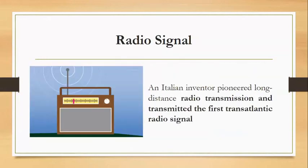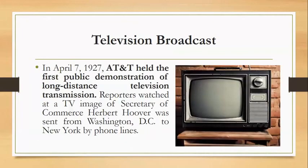After the telephone, our way of communication upgraded to radio signals. An Italian inventor pioneered long-distance radio transmission and transmitted the first transatlantic radio signal. From radio signals, we have television broadcast. On April 7, 1927, AT&T, a Bell Telephone Company, held the first public demonstration of long-distance television transmission. Reporters watched a TV image of Secretary of Commerce Herbert Hoover, which was sent from Washington, D.C. to New York by phone lines.